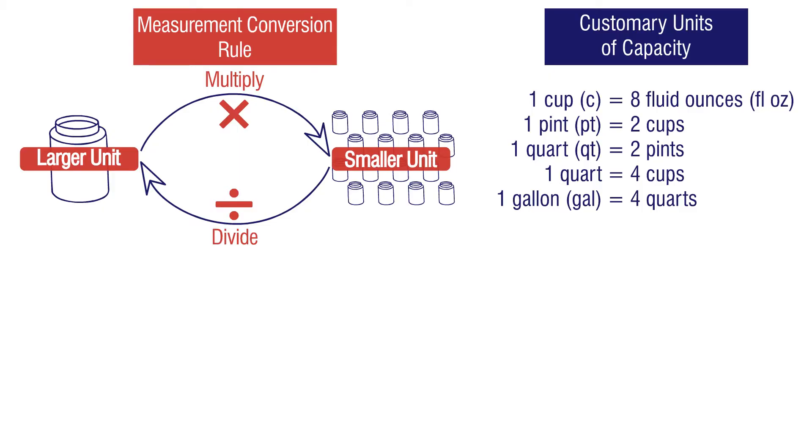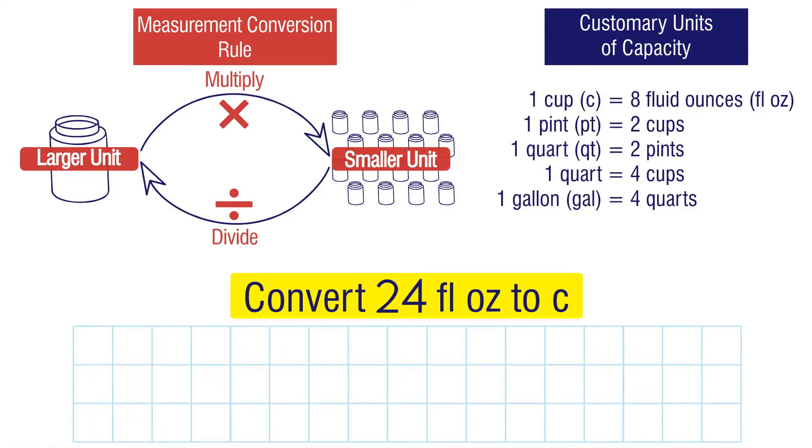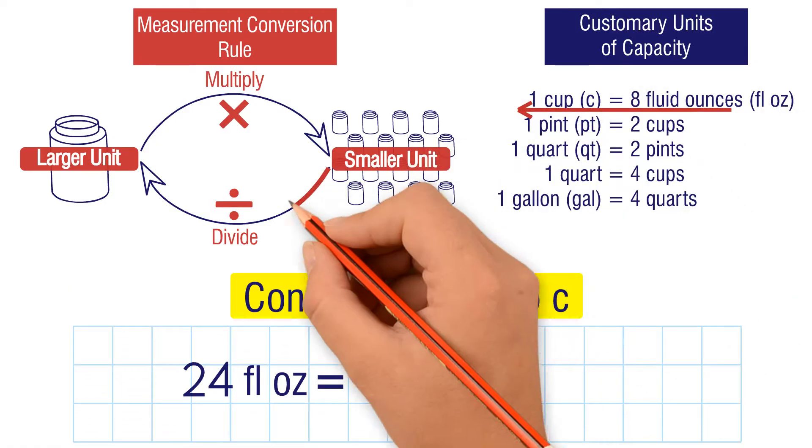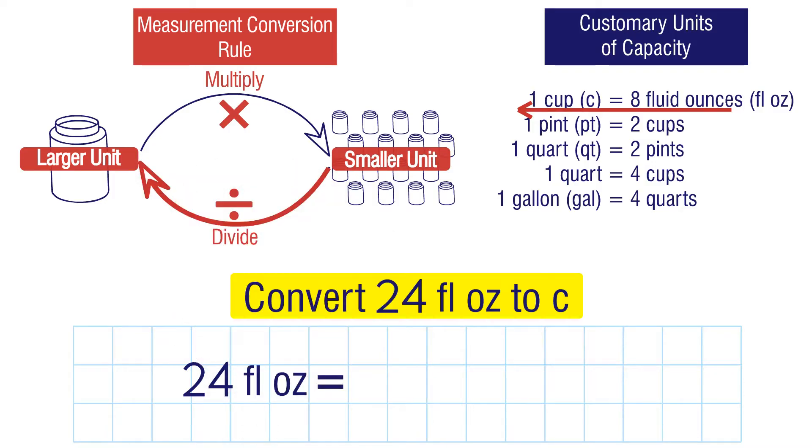Let's try an example. Convert 24 fluid ounces to cups. We're going from smaller units to larger units, so we need to divide. One cup has eight fluid ounces, so we divide 24 by 8 to get three cups. So 24 fluid ounces is the same as three cups.